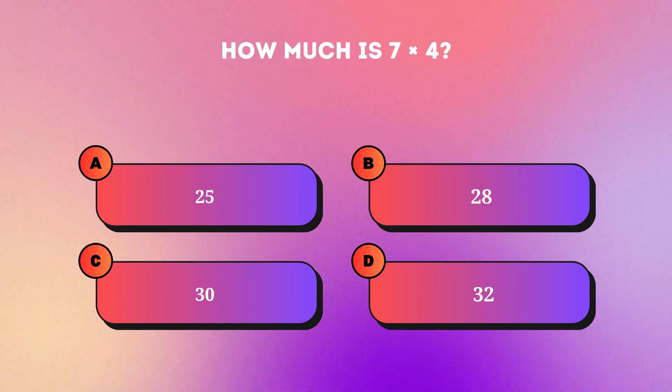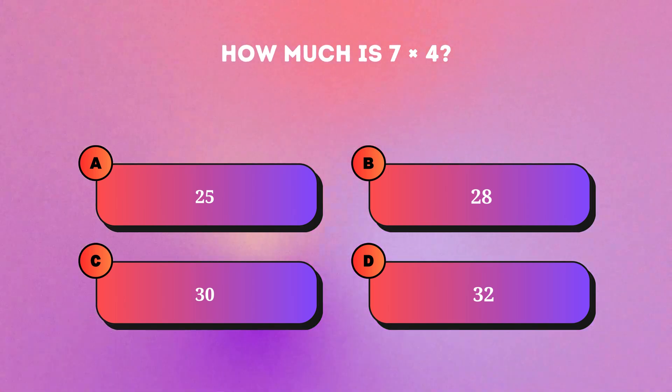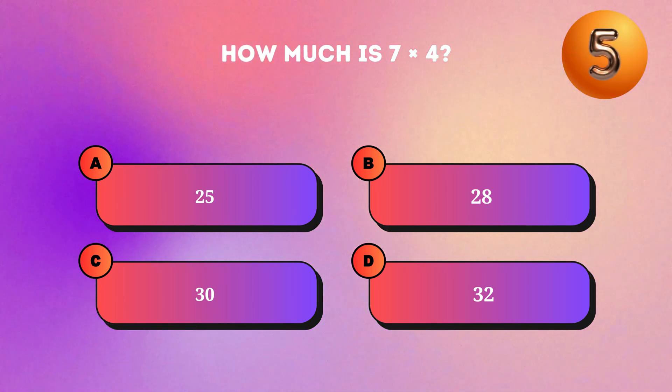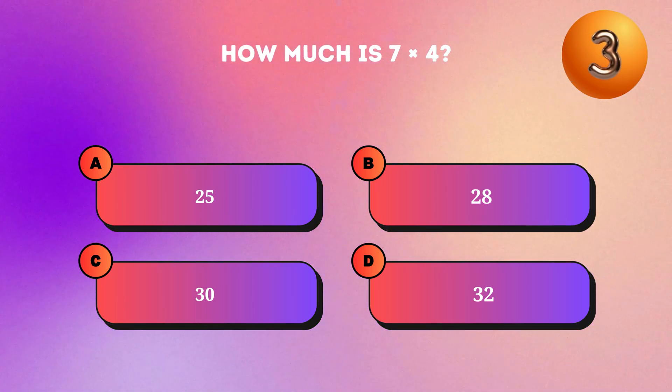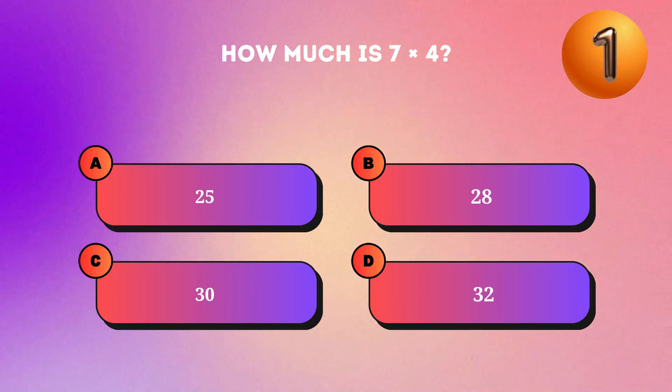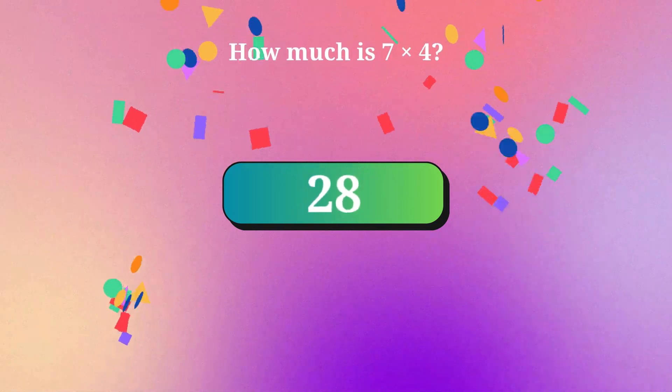How much is seven multiplied by four? Twenty-eight.